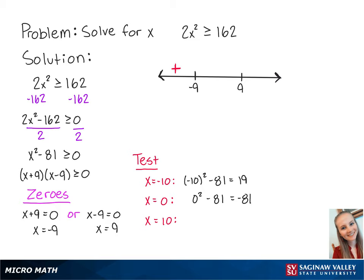This means that x values between -9 and 9 will make the left side of the inequality negative. For x = 10, we have 10 squared minus 81, which equals 19. This means that x values greater than 9 will make the left side of the inequality positive.